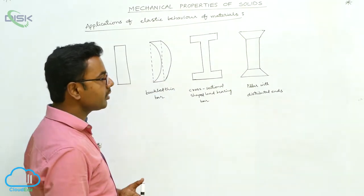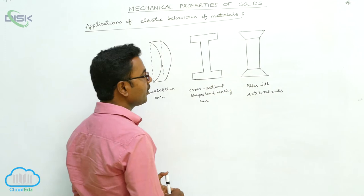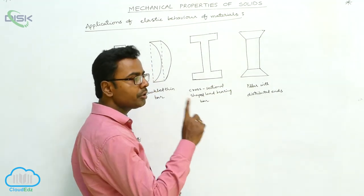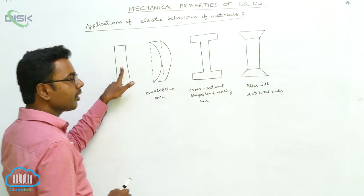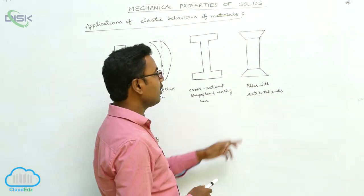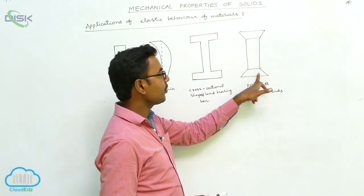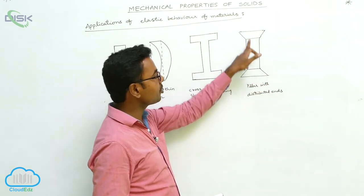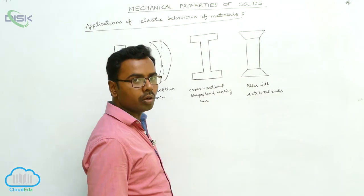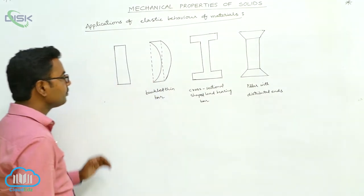Or the pillars which are constructed with bridges cannot be taken as round shaped bars, round shaped pillars. These are constructed as pillars with distributed ends. The pillars with distributed ends support more load compared to the pillars with rounded ends.